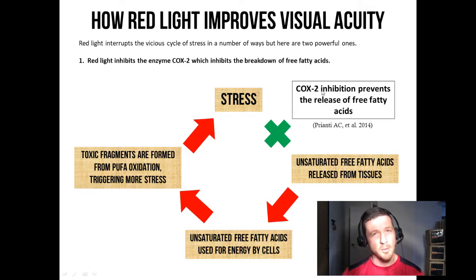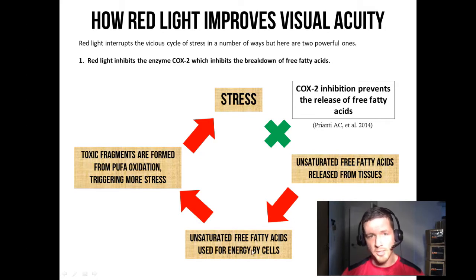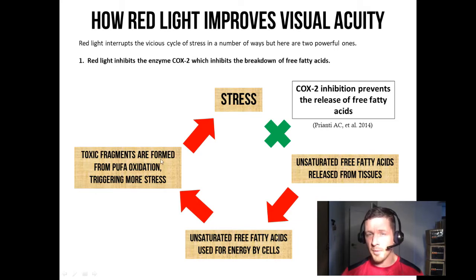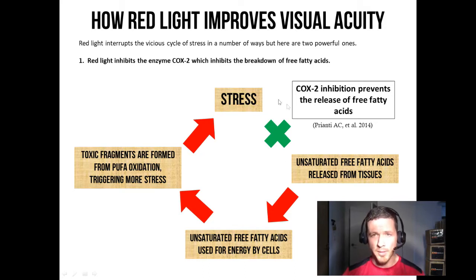That breaks the chain right there. If COX-2 is inhibited, the unsaturated free fatty acids will not be released from tissues and will not be used for energy, and then the toxic prostaglandins and other fragments will not be formed, which means stress will not continue to be promoted. This whole vicious cycle of stress is broken by red light therapy inhibiting COX-2.